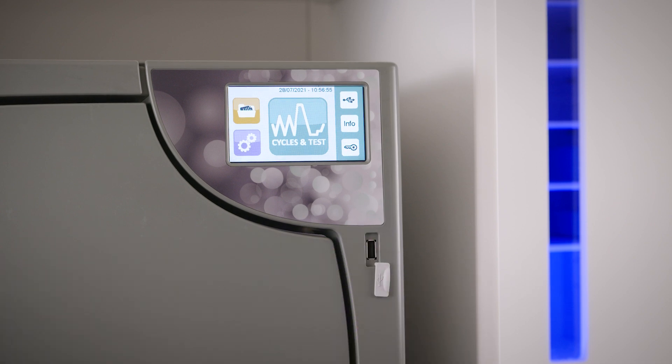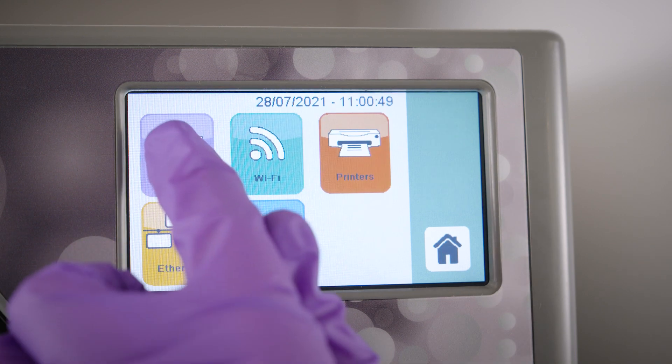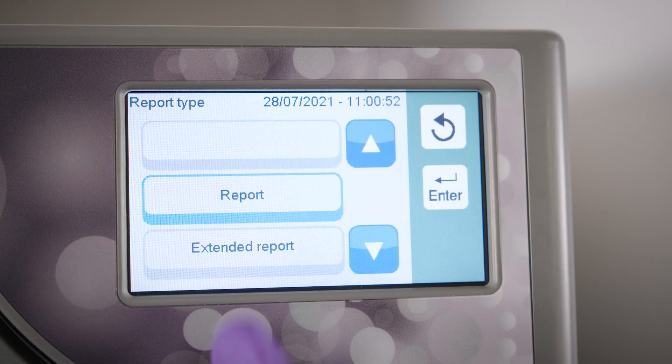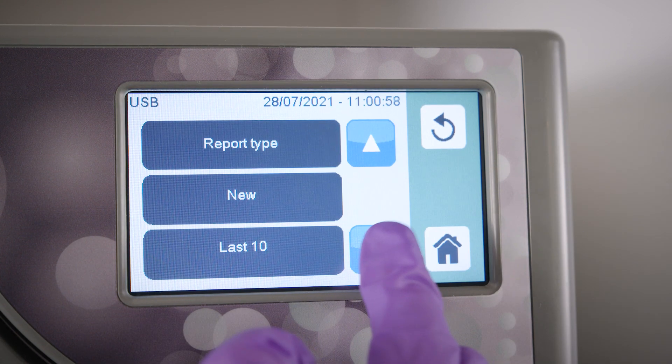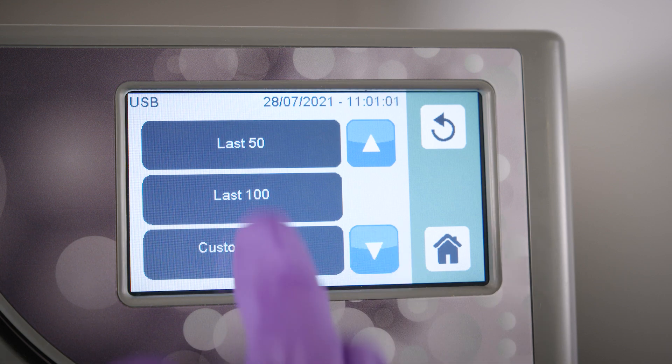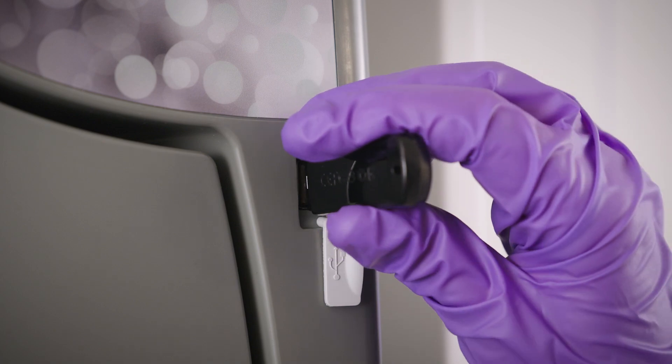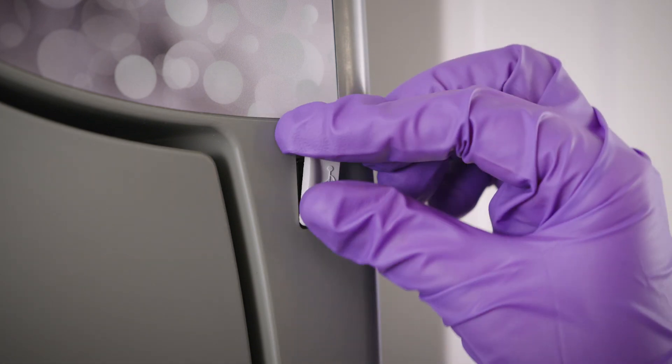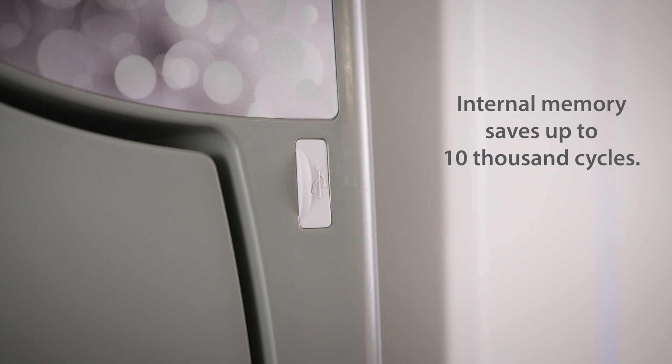To download the sterilization cycles and test files, select the Data Management icon and then press the USB icon. The cycle report files are in PDF format. It is possible to select the number of cycles to download onto the USB key. It is important to remember not to turn on your sterilizer while the USB is inserted into the machine. This is because the unit automatically looks for new software updates any time a USB is inserted when the machine is turned on. Since your Bravo G4 has enough built-in memory to save up to 10,000 cycles, having the USB inserted at all times is no longer necessary.